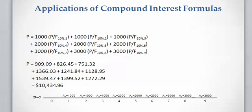There is also another way to calculate the present value of these payments: you can calculate the present value of each payment individually using the factor P/F, and then add them all together. You might find this method more convenient, though it requires more calculation. For the first three payments, the present value equals one thousand dollars multiplied by P/F(10%, 1) for the first payment, since it is one year from the present; P/F(10%, 2) for the second payment; and P/F(10%, 3) for the third.